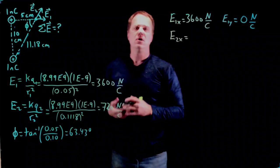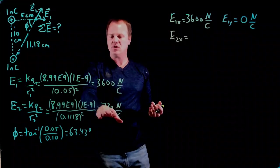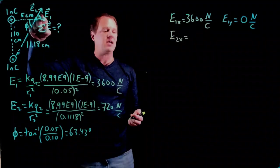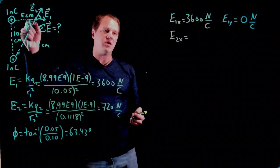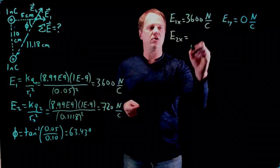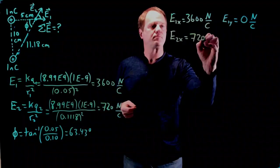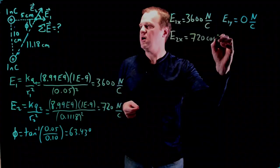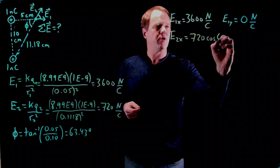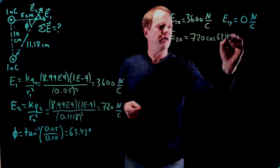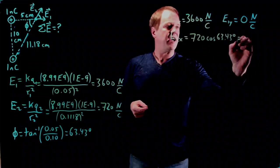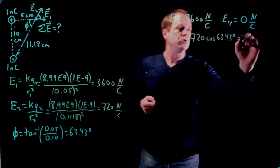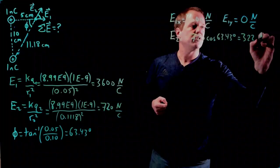And then with E2, I'm going to have to use a little bit of trig. So magnitude times cosine of this angle. So this angle is this angle as well, measured counterclockwise from positive x. So I can just use the magnitude times cosine of 63.43. I don't have to worry about drawing a triangle or anything. And I get an answer of 322 newtons per coulomb.